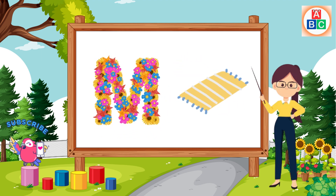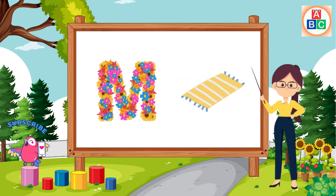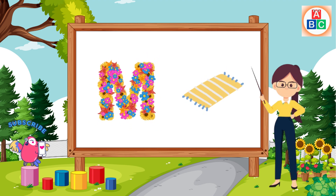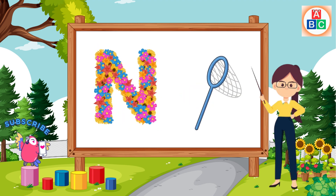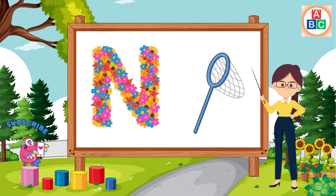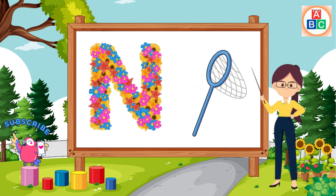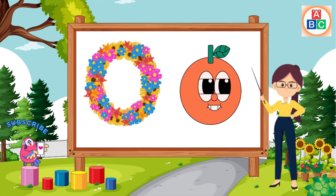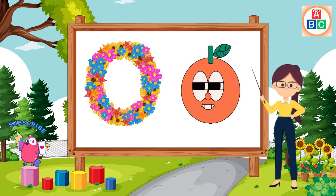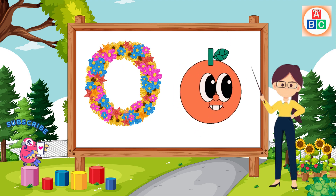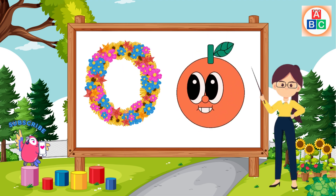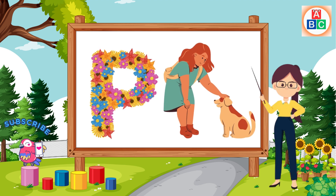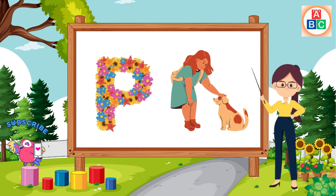M is for mat, m-m-mat. N is for net, n-n-net. O is for orange, o-o-orange. P is for pet, p-p-pet.